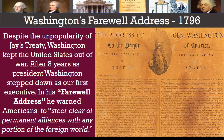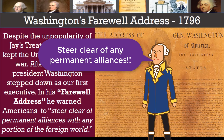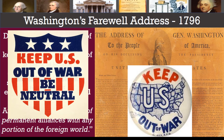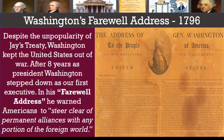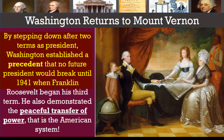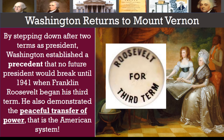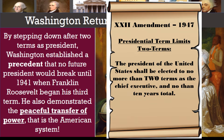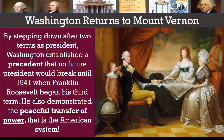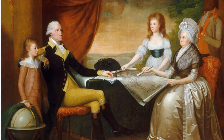In his farewell address, Washington warned Americans to steer clear of permanent alliances with any portion of the foreign world. This policy of neutrality would last in America for a long time, mostly up until the world wars of the 1900s. By stepping down after two terms as president, Washington established a precedent that no future president would break until 1941, when Franklin Roosevelt began his third term. Signed in 1947 following Roosevelt, the 22nd Amendment was passed, making it law that presidents could only serve two terms.